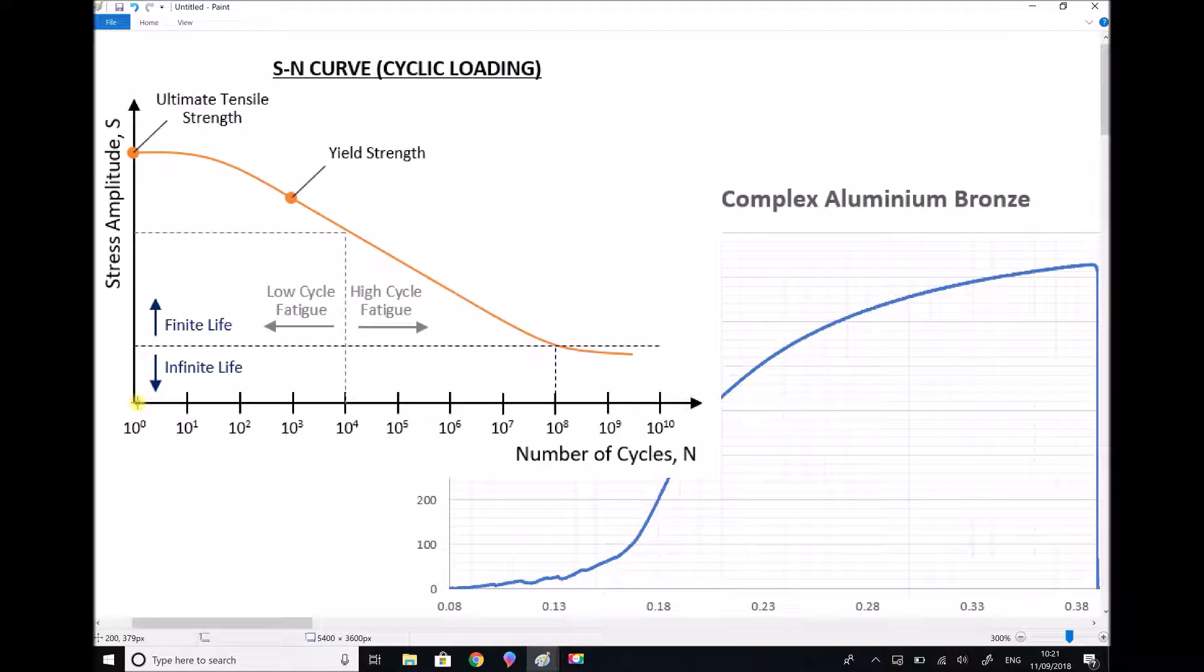At lower stress values the number of cycles that can be achieved increases. So at around 500 MPa on our stress strain graph here we know that we're into plastic deformation and if we were to find a similar value on our S-N curve then that would dictate the number of cycles that can be achieved.